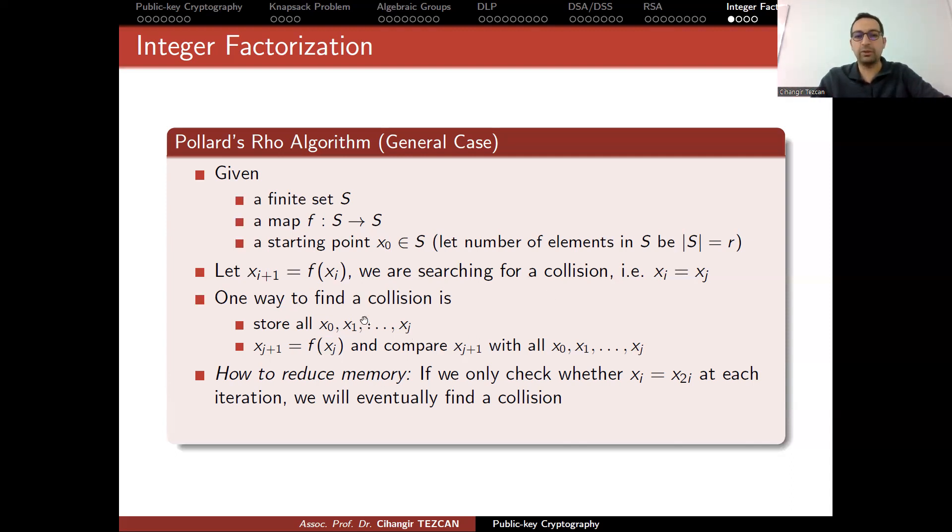This is why we call it the Rho algorithm, because it looks like the Greek letter rho. Instead of storing any values, you just check at double steps if it is equal to the previous one. Once you start calculating these values and obtain this rho picture, you will be inside this circle, and at some point xi would be equal to x2i.